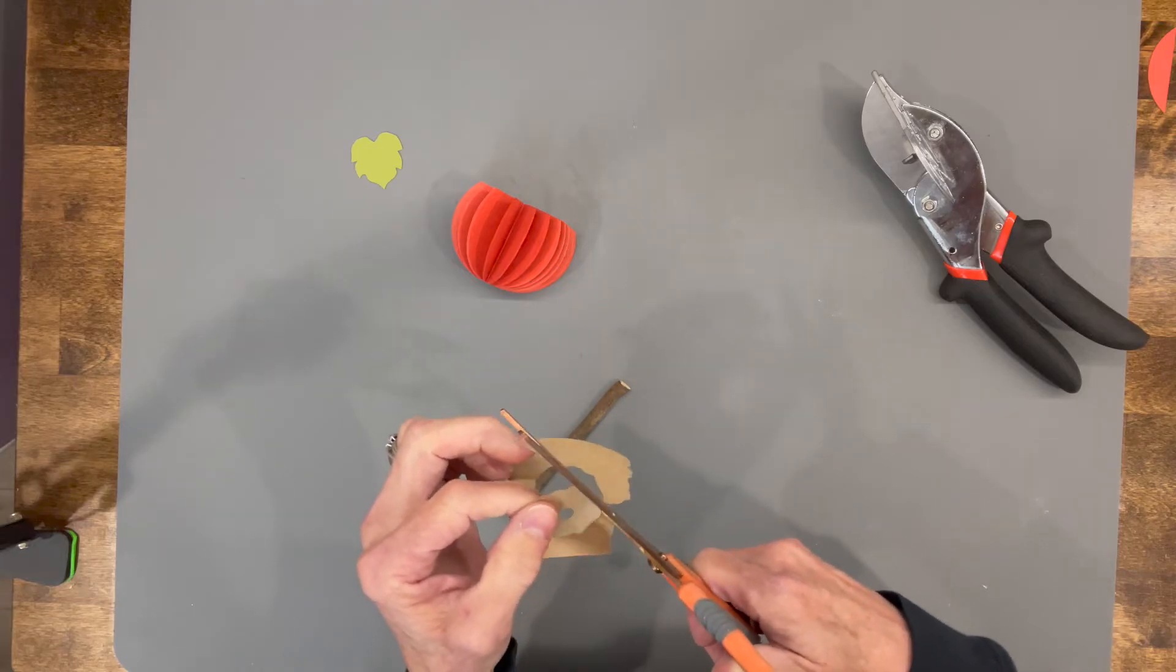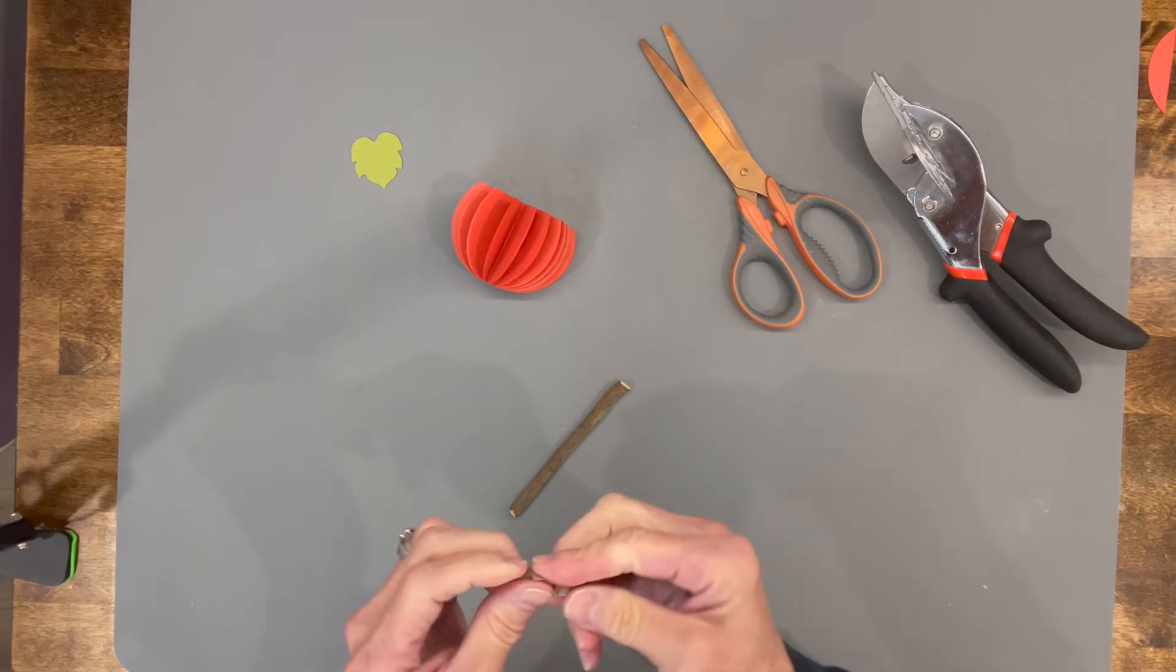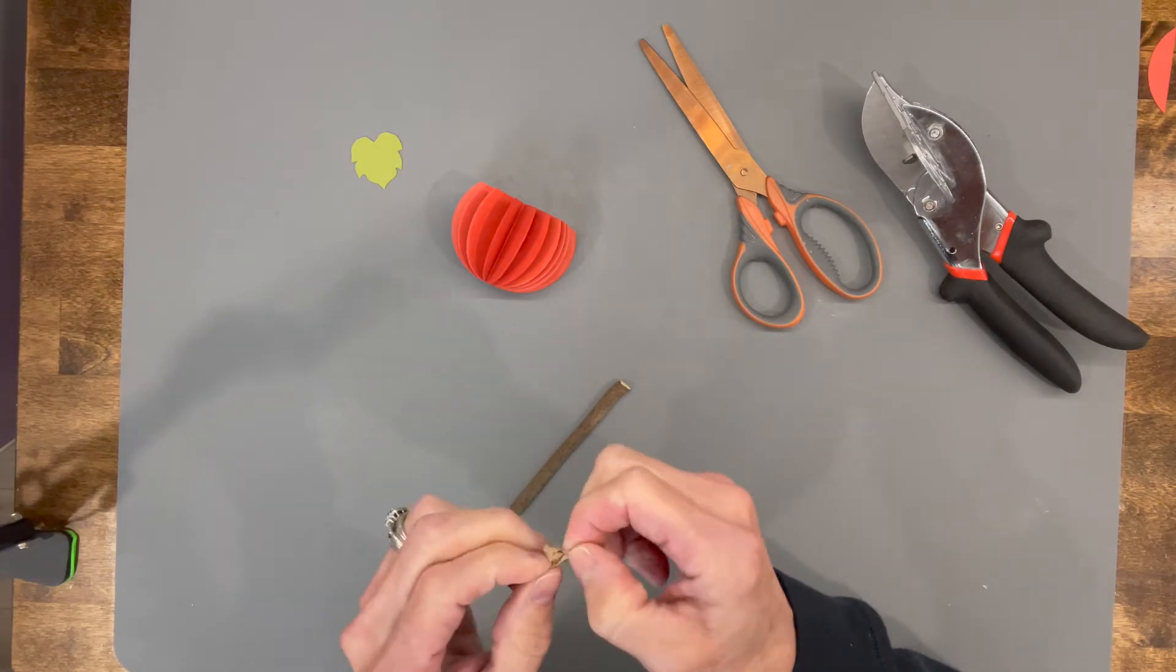Then you're going to take this piece of paper and you're going to kind of wad it up because you want it more wrinkled. Then open it back up.